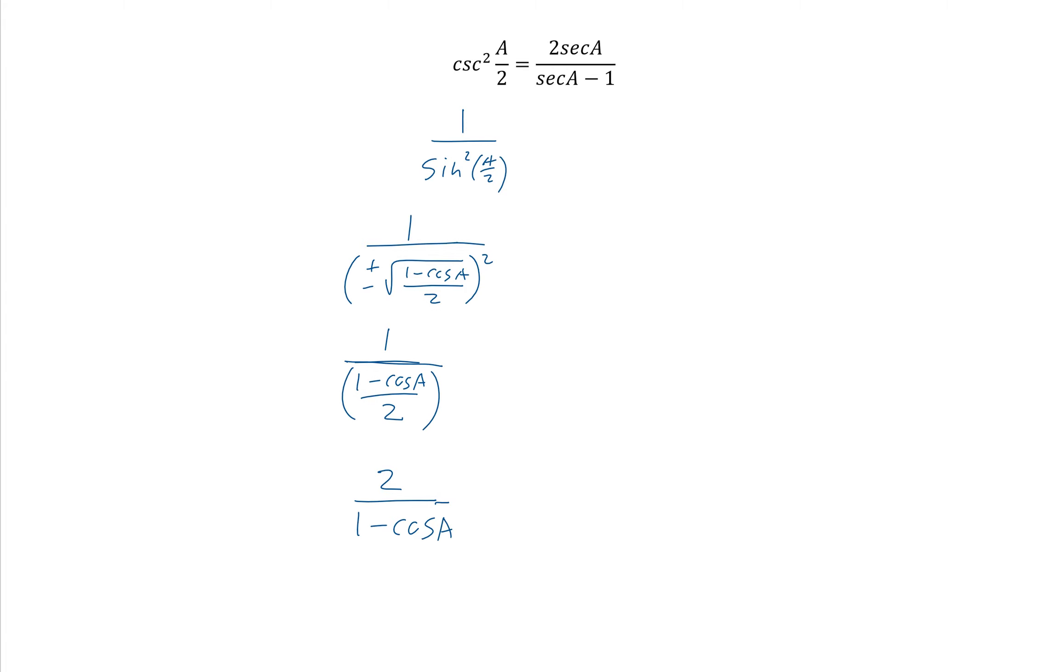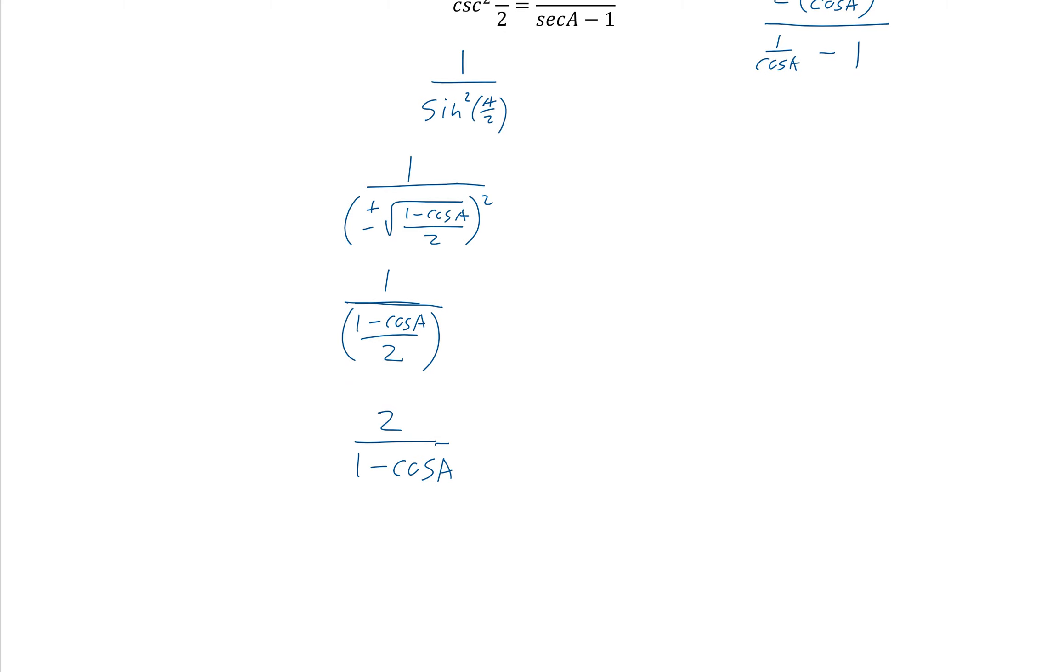Now we come over here, and what we need is secant a minus 1. So this is completely legal. You can come over here and write what it is. This is 1 over cosine a. And 1 over cosine a minus 1. So we need this to be cosine a.